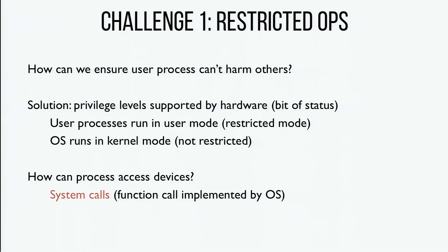The solution requires hardware help. Every modern architecture has at least two privilege levels: a lower level for user-level processes and a higher level for the OS — user-level and kernel-level. In kernel mode, the hardware can execute any instruction without causing traps or exceptions. If a user process tried to access certain registers, you'd get an exception and trap into the OS. So to let user-level processes access devices, we add system calls — functions implemented by the OS.